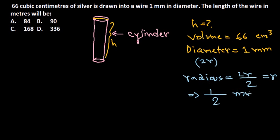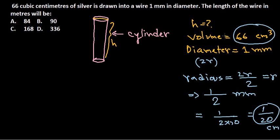But we also need to convert the unit to centimeter because everything here is in centimeter. So millimeter to centimeter, we simply multiply it with 10 in the bottom, so we get 1/20 centimeter as the radius. So we get the value of radius which is 1/20 centimeter. We get the volume. We need to calculate the h. So we get everything except for h.